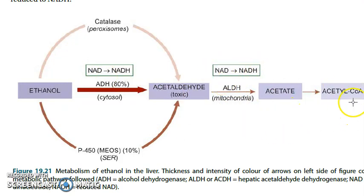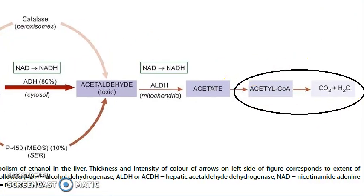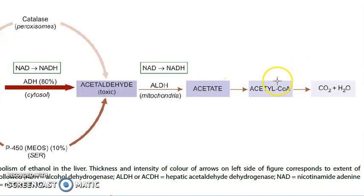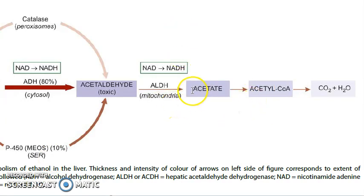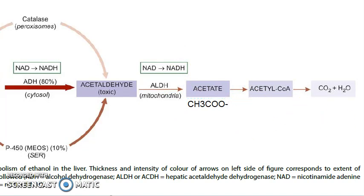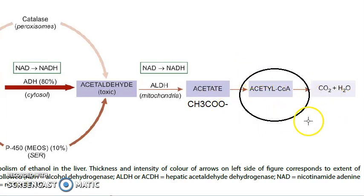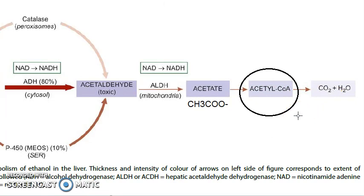Now acetate will become acetyl-CoA. Acetyl-CoA will become water and carbon dioxide. Acetate is nothing but acetic acid — CH3COO minus, with one H missing from acetic acid. That becomes acetyl-CoA, which is a common metabolite between carbohydrates, proteins, and fats.